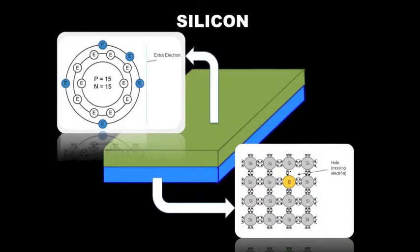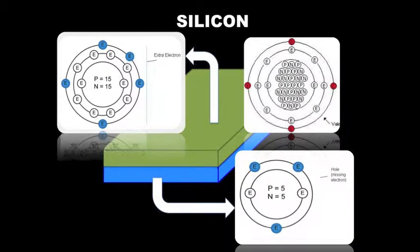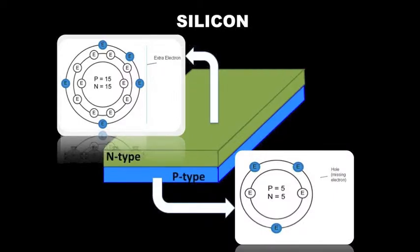Phosphorus has 5 valence electrons and boron has 3 valence electrons. Therefore, when added to silicon, which has 4 valence electrons, the phosphorus layer contains more electrons and the boron layer contains more holes. The phosphorus and boron doped layers are referred to as the N-type layer and P-type layer respectively.